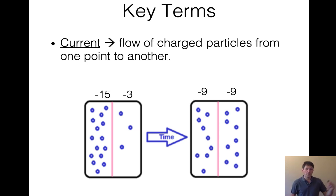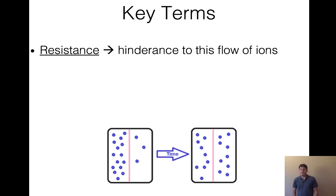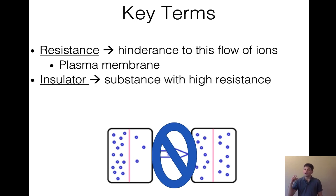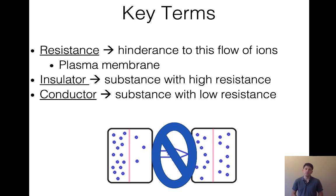Resistance is what hinders or resists that flow of charged particles. In our case, this is the plasma membrane — it separates those charges on the extracellular or intracellular side and acts like a resistor, reducing or blocking the flow of ions. Then membrane proteins allow ions to flow through. An insulator is a substance that has high resistance — like our myelin. A conductor is a substance with low resistance — our axons are our conductors.